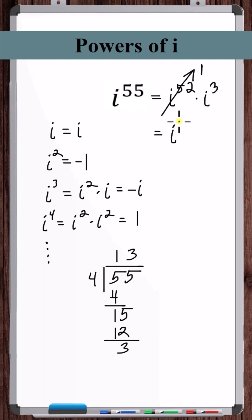So we're left with i cubed, but i cubed equals negative i. Therefore, i to the power of 55 equals negative i.